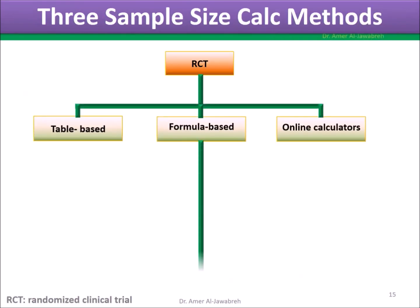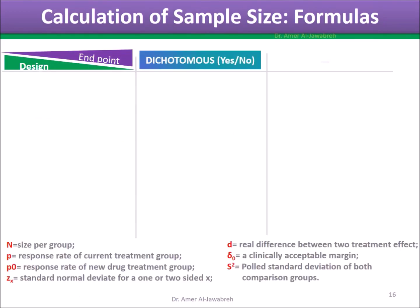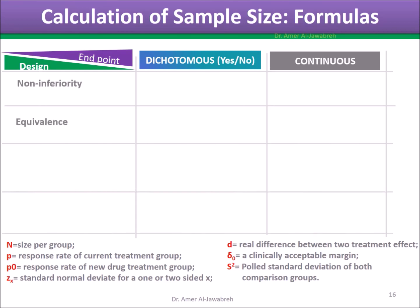Formula-based method. The table shows two endpoints — dichotomous (yes/no result) or continuous outcomes — versus the RCT designs, with each having its own special formula.